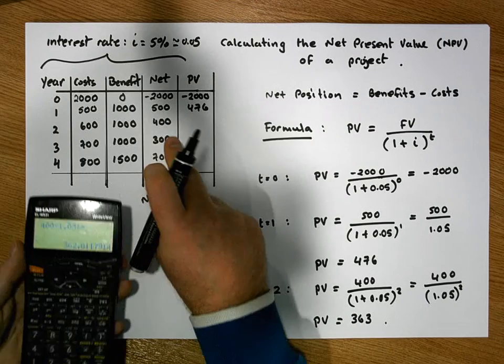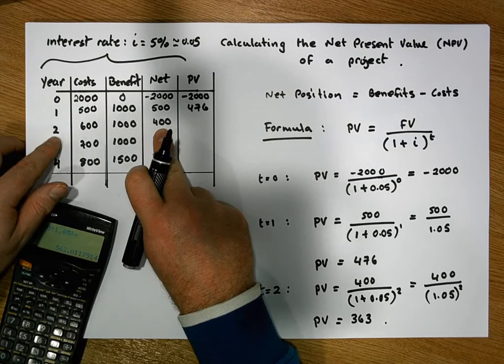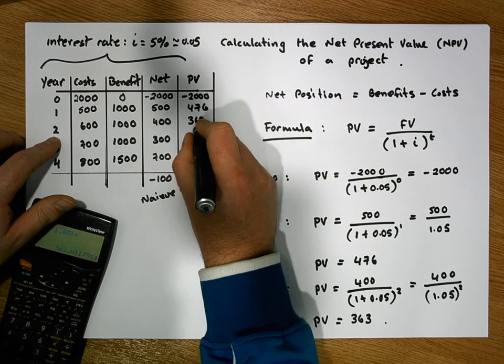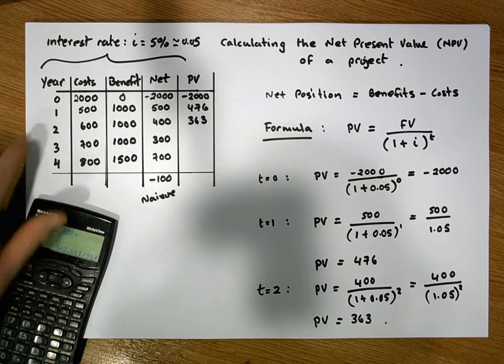So 400 euros in two years' time is only equivalent to 363 euros today, if interest rates are running at 5%.